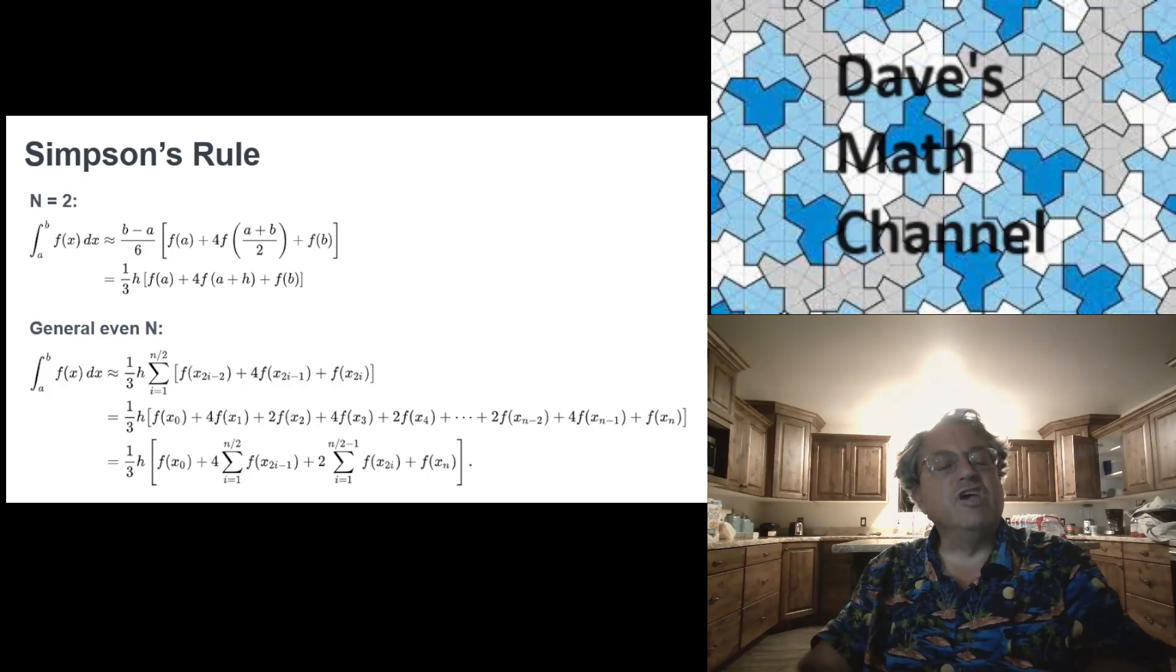And then the thing that goes inside has a nice pattern. You take f of a, that's your first term inside. Then you take 4 times f of x1, 2 times f of x2, 4 times f of x3, and so on. Just alternate the 4s and 2s until you get to the last one, which is just f of xn, or if you like, f of b. So that's how you do it.